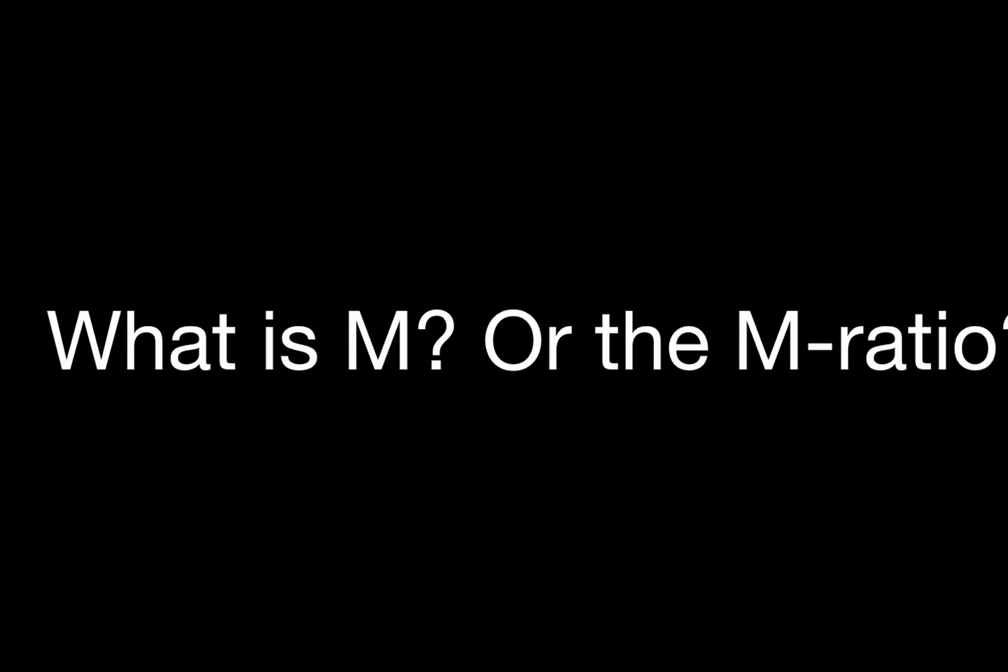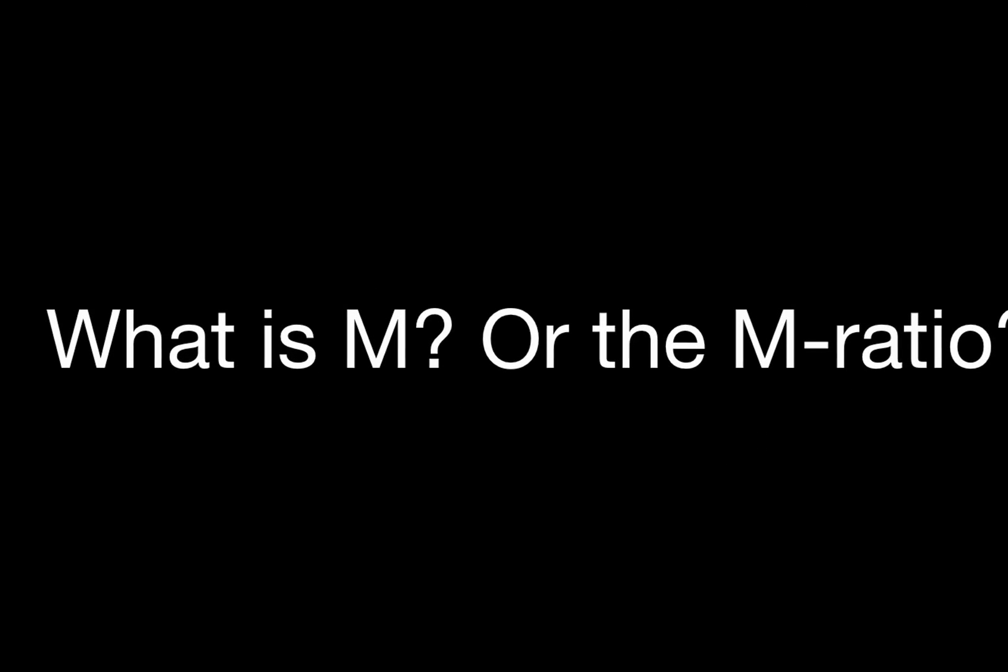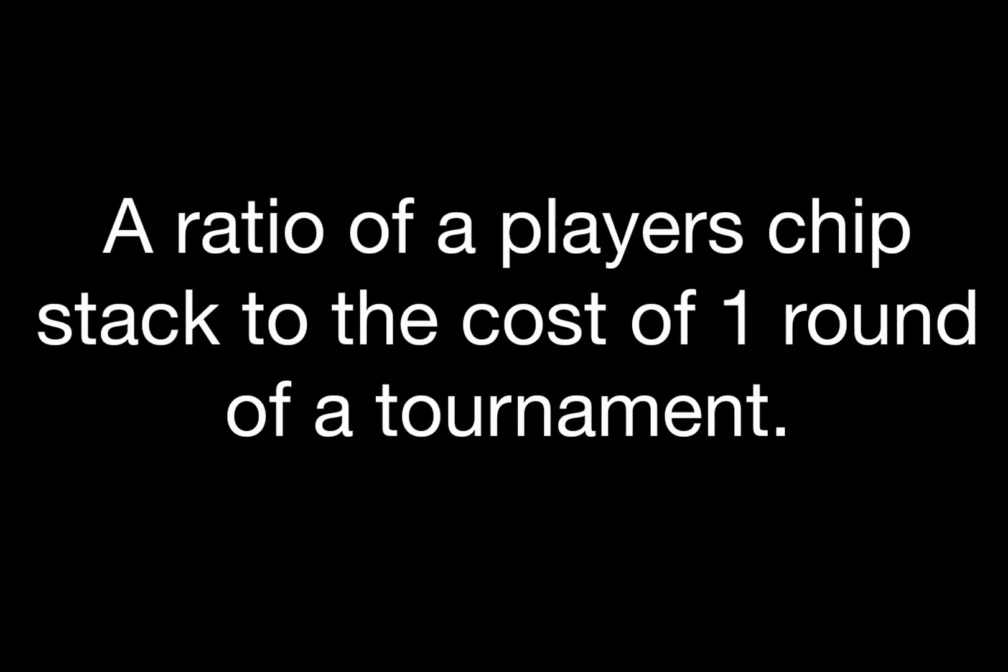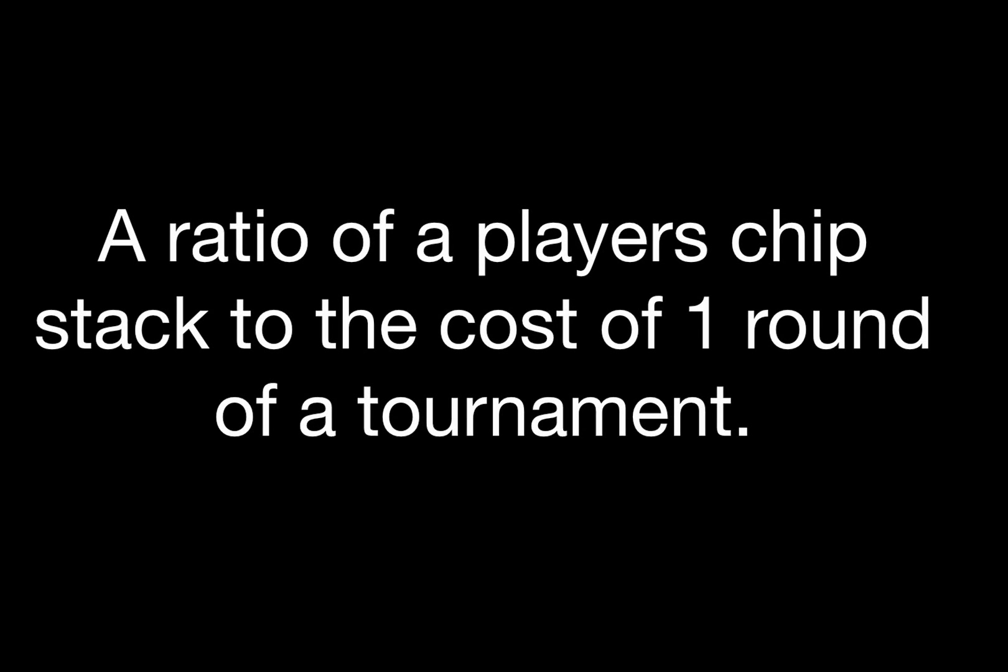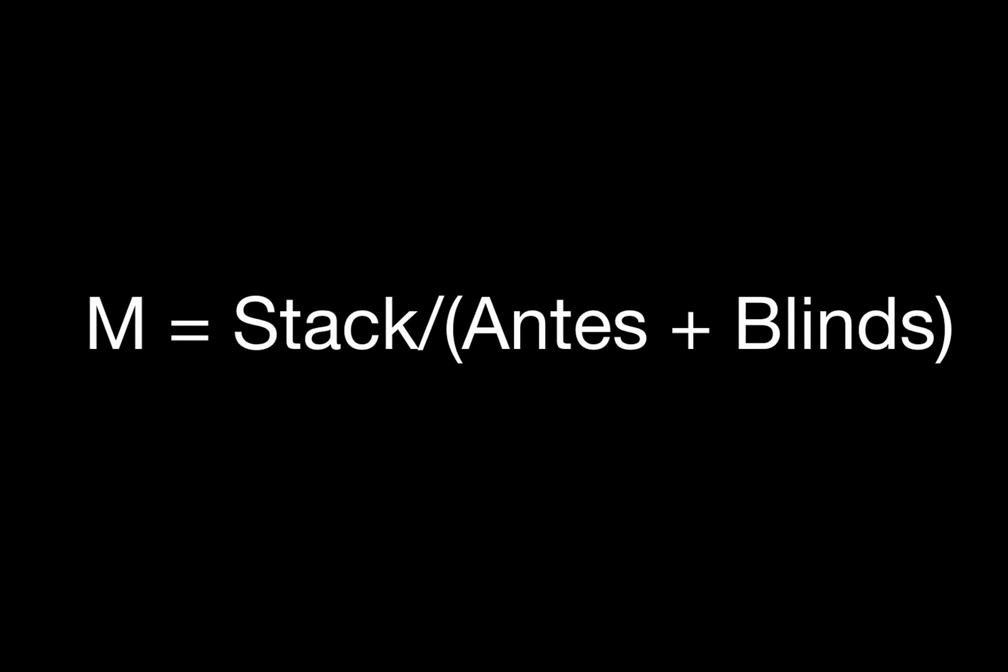So what is M, or as I like to call it, the M ratio? Just to start off with a simple definition, it's a ratio of a player's chip stack to the cost of one round of a tournament. So, comparing how many chips I have in front of me to the cost of one round of a tournament. The formula is stack, so my player's stack, divided by the antes plus the blinds.